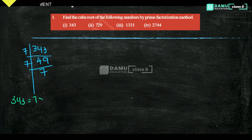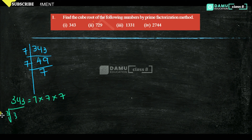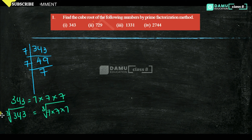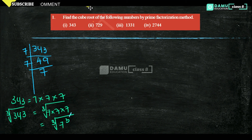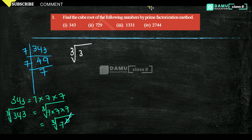So 343 can be written in the format of 7 × 7 × 7. Cube root of 343 = cube root of 7 × 7 × 7, that is cube root of 7 cubed. The cube root and cube cancel each other, so cube root of 343 = 7.